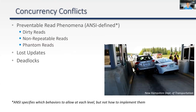ANSI defines three types of preventable read phenomena: dirty reads, non-repeatable reads, and phantom reads. What's important to note is that ANSI specifies what behaviors are allowed at each isolation level, but not how to implement the solution — which is why different databases have different implementations. There are also other issues of lost updates and deadlocks that we'll touch on briefly.